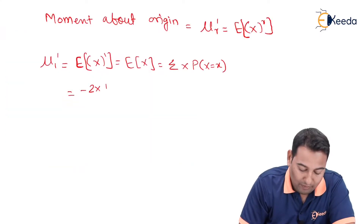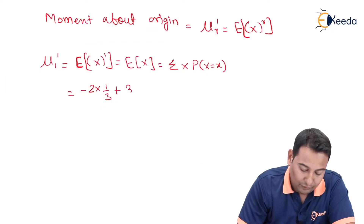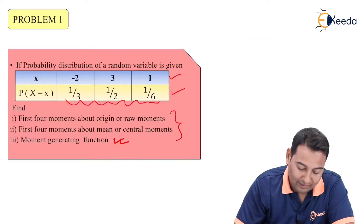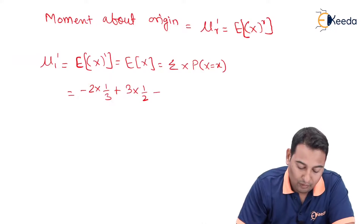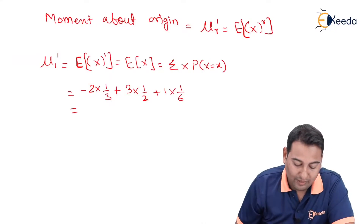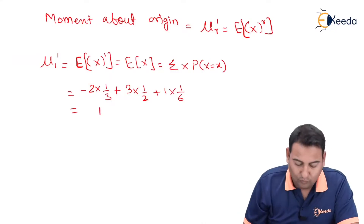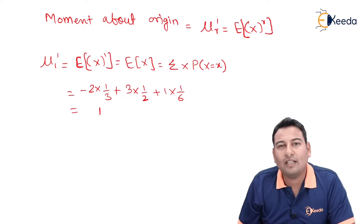Substituting the values: that is minus two into one-third, plus three into one-half, plus one into one-sixth. If you solve, you will get one. So the first raw moment mu one dash is equal to one.